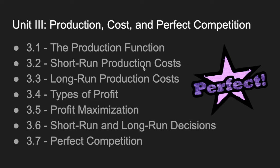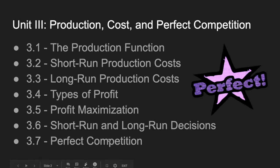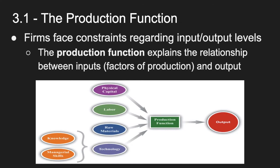The production function and short run production costs are what we're covering today. Later this week, we're going to get into long run production costs, which look a little bit different from the short run. We'll also cover different types of profit, how to maximize that profit, making decisions in the short run and the long run based on our financial results, and Section 3.7 gets into the perfectly competitive market a little bit deeper. So today, 3.1: the production function.